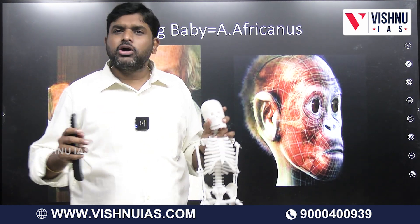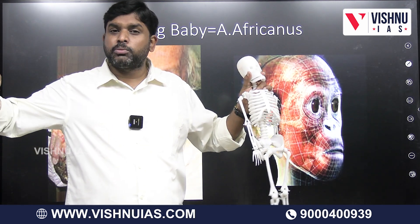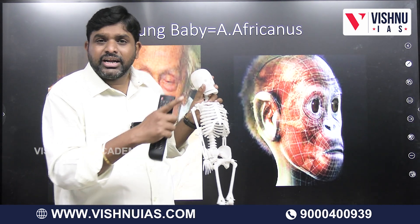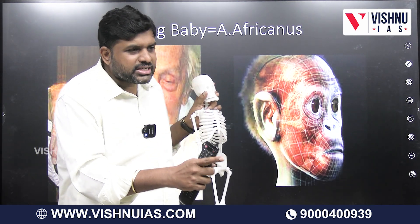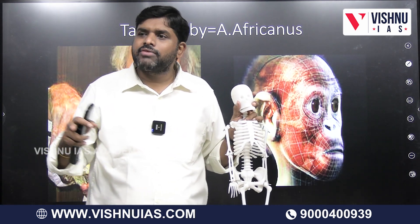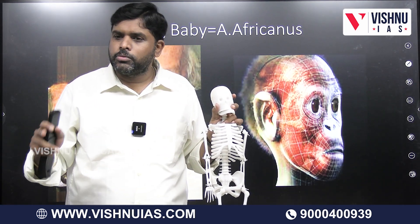We came to a conclusion that because of its robust build, the Robustus variety might have become extinct. And the Gracile variety had evolved into Homo.